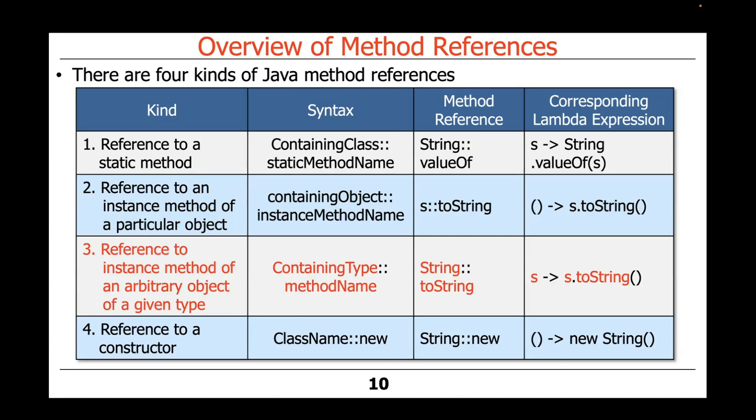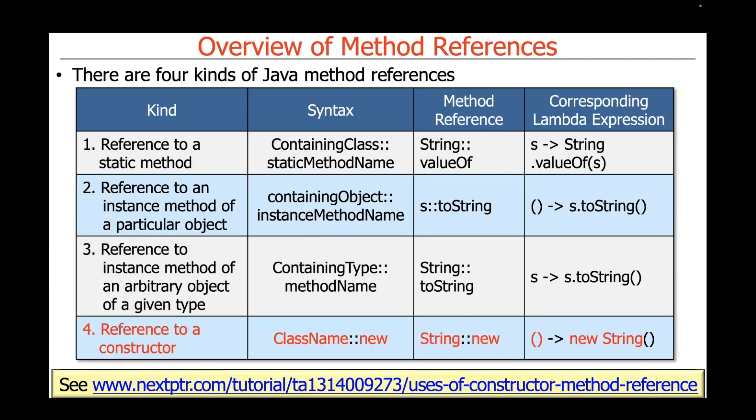Yet a third kind of Java method reference is a reference to an instance method of an arbitrary object of a given type. In this case, we'd have something like containing type colon colon method name, such as string colon colon toString. Once again, in this case, you can see that the corresponding Lambda expression is s arrow s dot toString, which is arguably a bit more verbose than string colon colon toString.